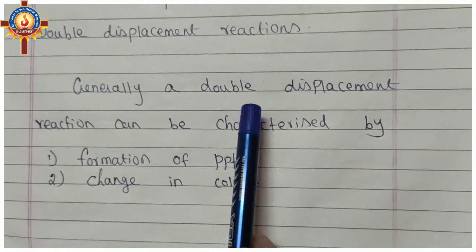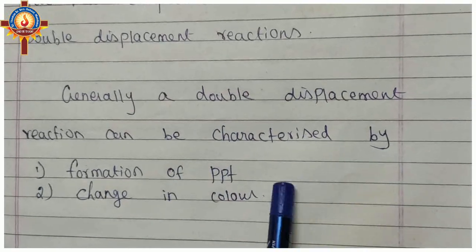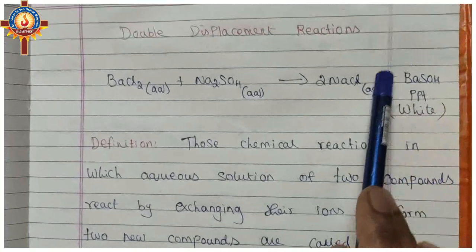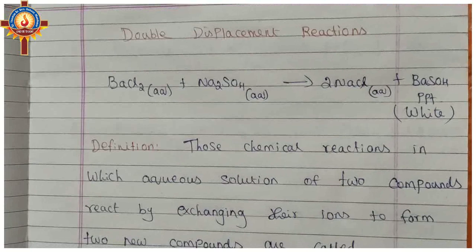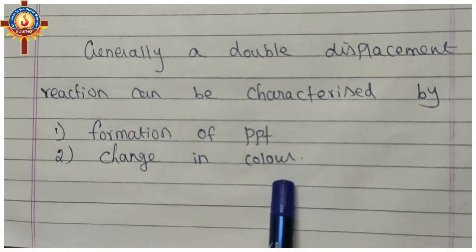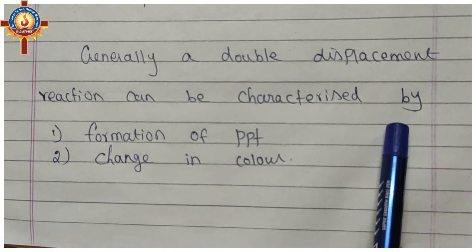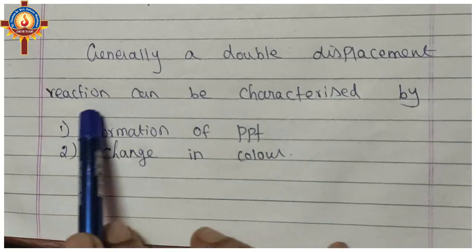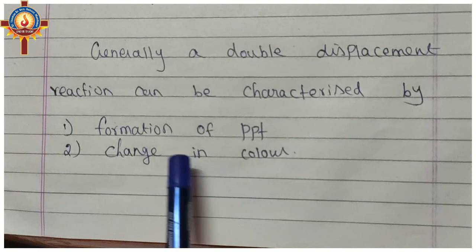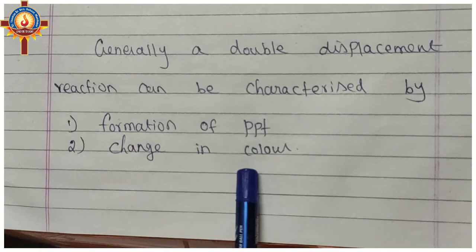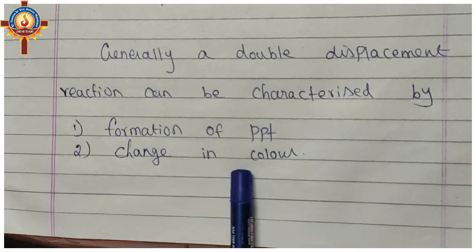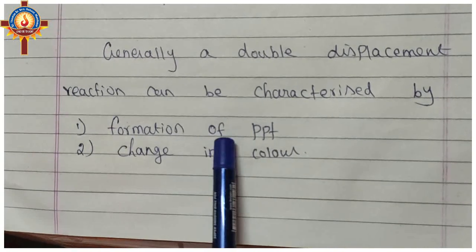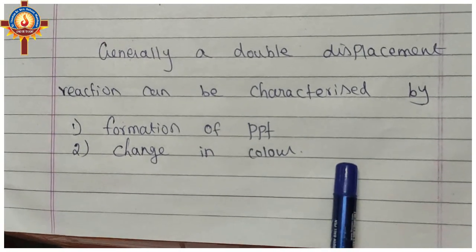A double displacement reaction can generally be characterized by two things: either by the formation of a precipitate, or by a change in the color of the reaction. Without these also, a double displacement reaction can take place, but maximum cases will show either a precipitate or a color change.